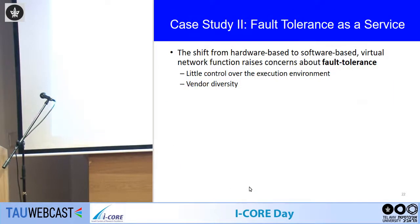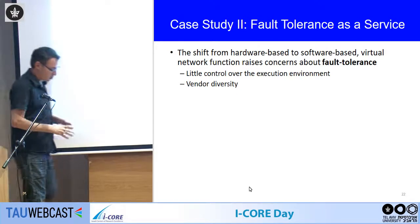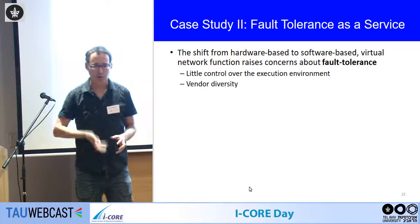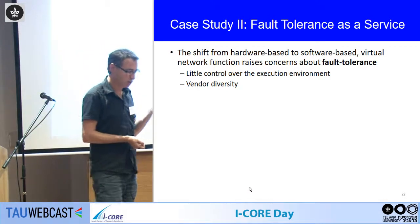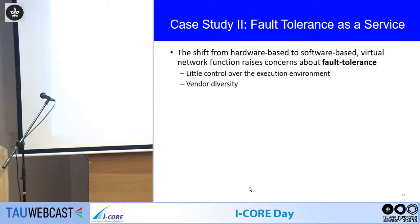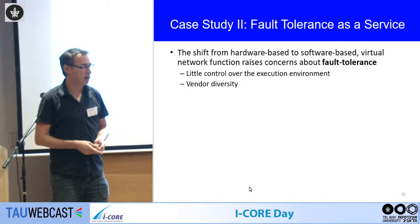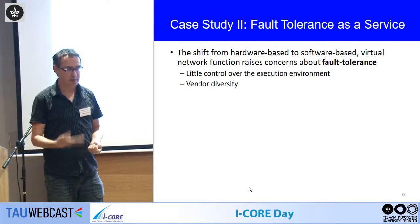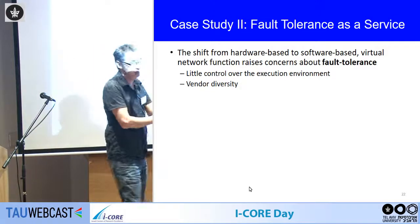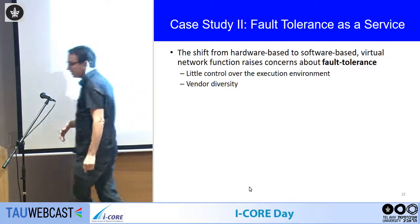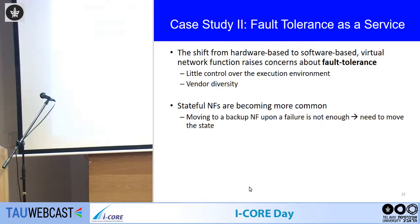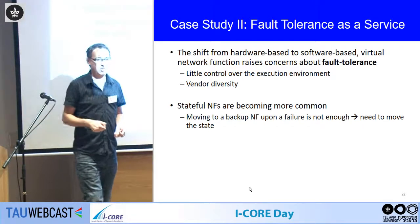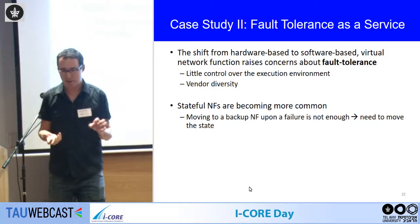The last case study, which is our most recent work currently under submission, is about fault tolerance. The shift from hardware middleboxes — which are monolithic, heavily tested, and run in well-defined environments — to virtual network functions running on commodity servers with various vendors causes many new failures. This makes fault tolerance an important consideration.